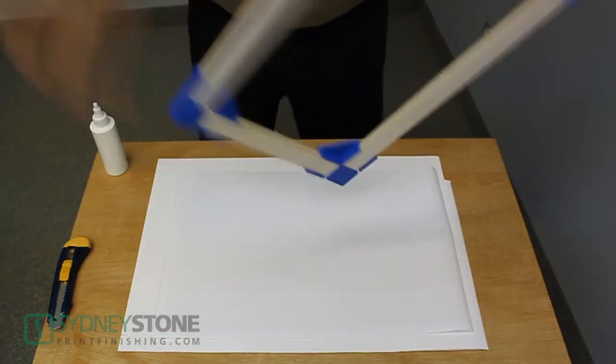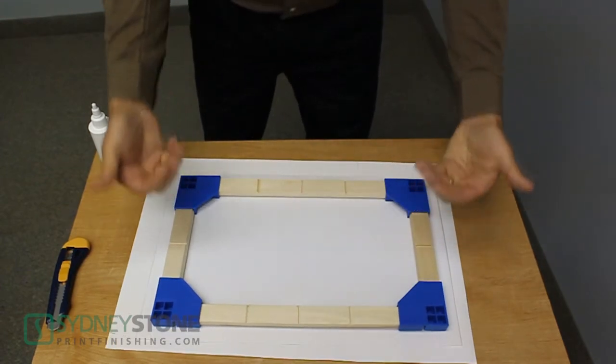We then take our laminated paper graphic and position the frame centered on the graphic. Because the bars are recessed in the corner brackets, this allows you to move the frame until it is centered without it tacking to the graphic.